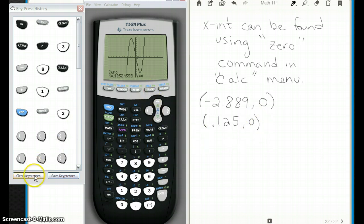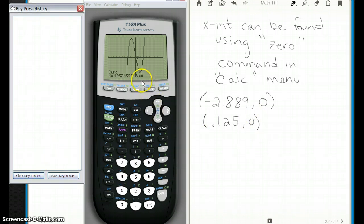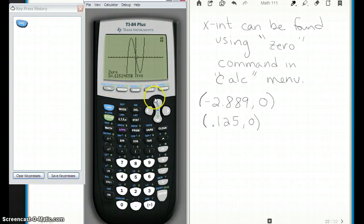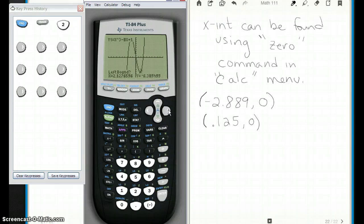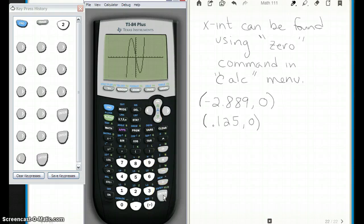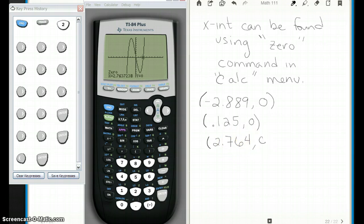Here we go. And there's one more. So let me clear my history here so you can see exactly what I'm pressing. So second calc. Hit number two for the zero. Again, if this is too fast, remember you can pause and find the buttons. I'm going to go over a little bit. I'm on the left side. Enter. I'm on the right side. Enter. And then get close as you can for that guess. And here's the last one. Two point seven six four, comma, zero.